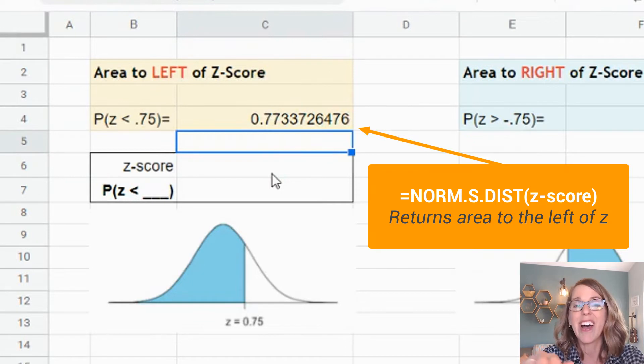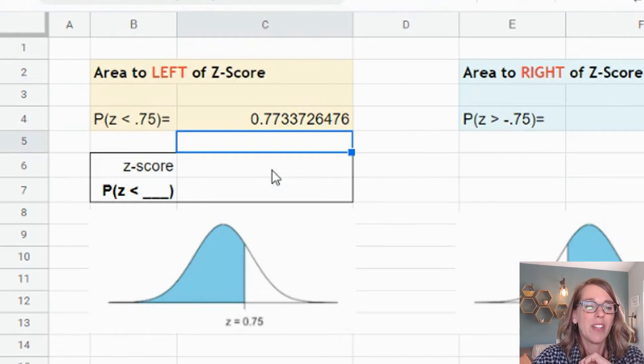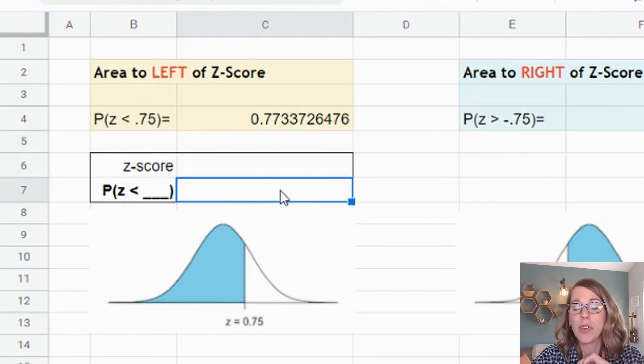This NORM.S.DIST automatically calculates the area to the left of whatever number you give it. Now, if you wanted to do this as a formula where you could type in any z-score that you wanted into the cell above, you can do it this way.